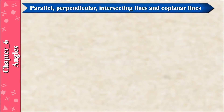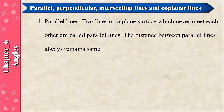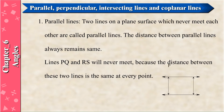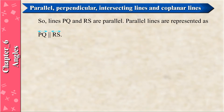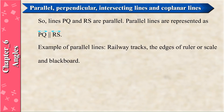Parallel, perpendicular, intersecting lines, and coplanar lines. Parallel Lines: Two lines on a plane surface which never meet each other are called parallel lines. The distance between parallel lines always remains the same. Lines PQ and RS will never meet because the distance between them is the same at every point, so lines PQ and RS are parallel. Parallel lines are represented as line PQ parallel to line RS. Examples of parallel lines: railway tracks, the edges of a ruler or scale, and a blackboard.